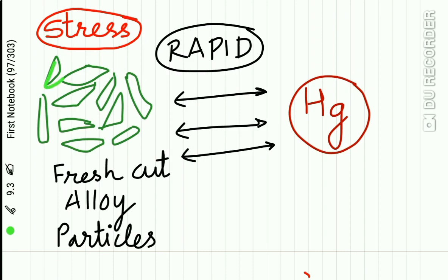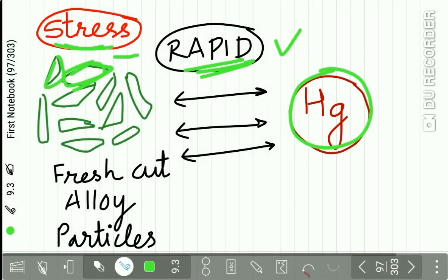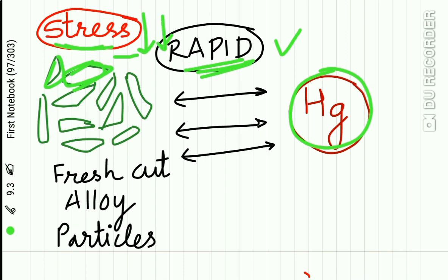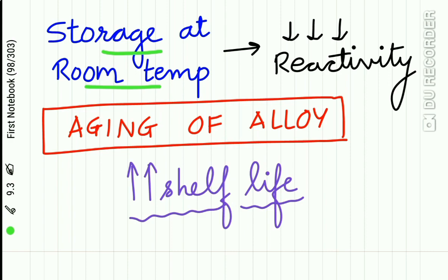These lathe cut alloy particles go through numerous processes of ball milling and other steps, so they are under stress. These stressed lathe cut alloy particles undergo rapid reaction with mercury, which is not desirable. To reduce the stress, storage of the particles under room temperature reduces this reactivity. This process of storage is also known as aging of alloy, which is desirable to reduce reactivity and increase the shelf life.